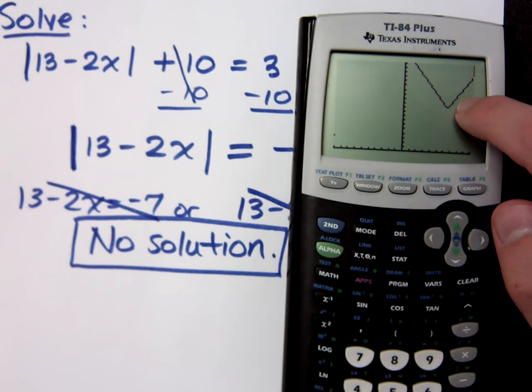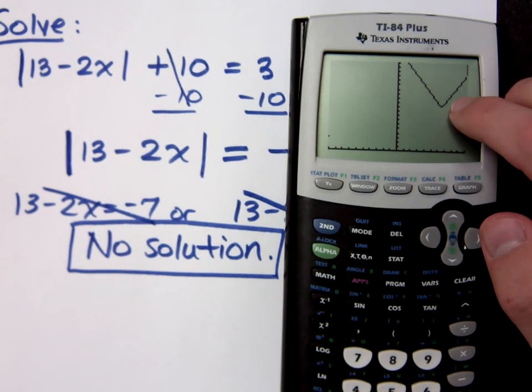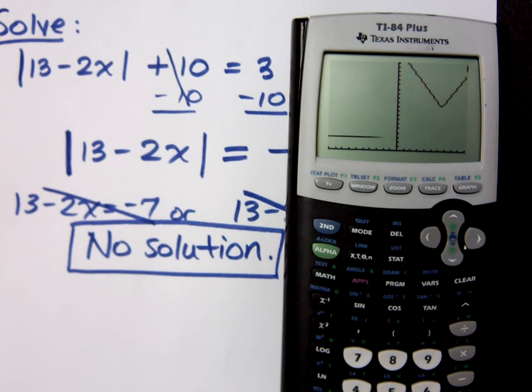This is my absolute value graph, right? I'm trying to see where this guy intersects y equals 3. Watch what happens. Where do these guys intersect? They don't intersect, do they? That's why we can say there is no solution here.